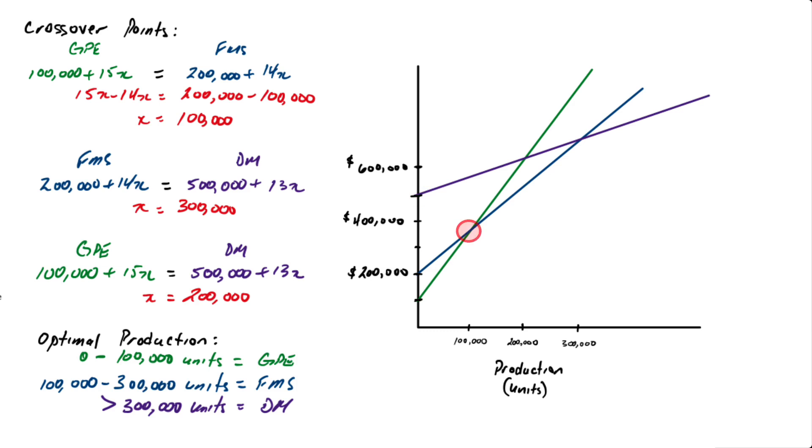You can see where the green line for GPE crosses the blue line for FMS at 100,000 units. Then you can see where the blue line for FMS crosses over the purple line for DM, and that's at 300,000 units. And finally we can see the crossover point for the green line GPE and the purple line for DM at 200,000 units.